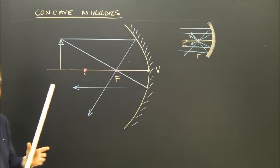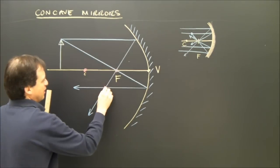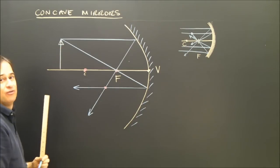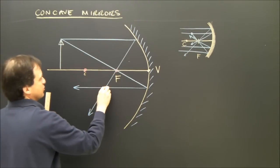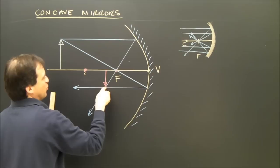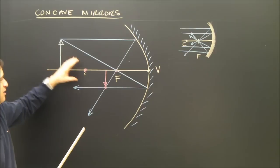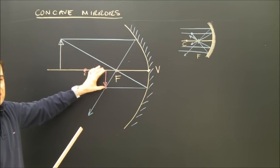And I can see where these two have met, right there. That locates the pointy part of my arrow. The axis is the other part of the arrow. So I can draw this. See, the pointy part is down there. There's the image of that. You'll notice it's smaller. It's inverted.